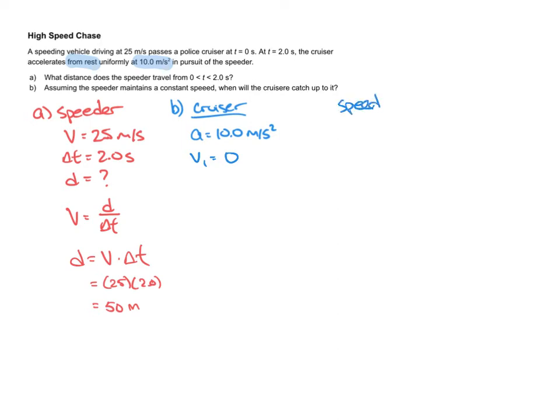Now this person has a 50 meter head start, remember. So their position, which I'm going to denote as d, their position at any given time is going to be that 50 meters initially, plus 25 delta t. So that 25 stands for the speed, 25 meters per second, multiplied by the delta t, which is the number of seconds that are going to pass here before the cruiser passes the speeder.